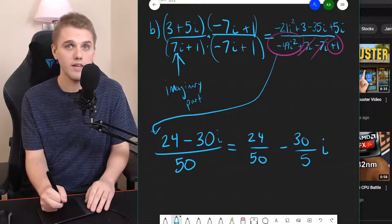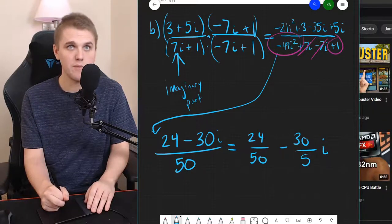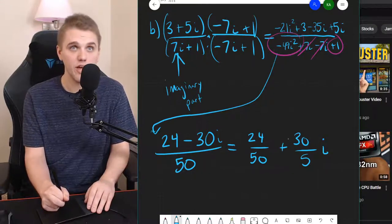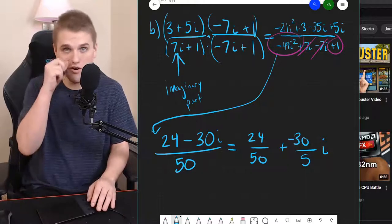And to be specific, I'm going to put this subtraction symbol as an addition symbol. And I'll put a negative 30 in the numerator.